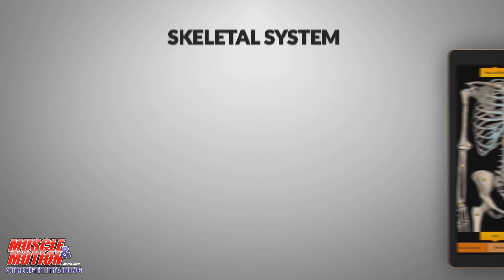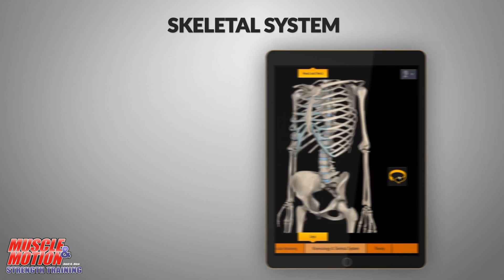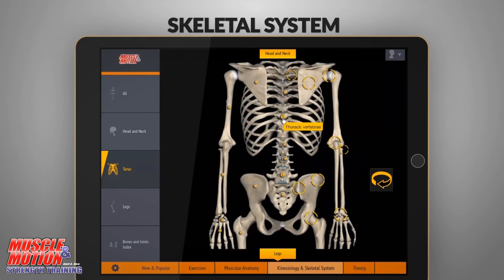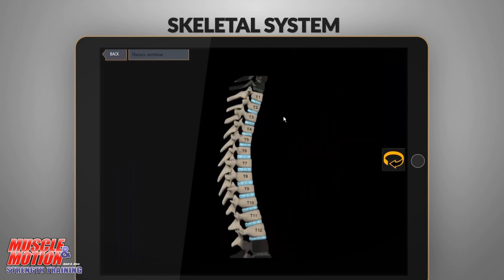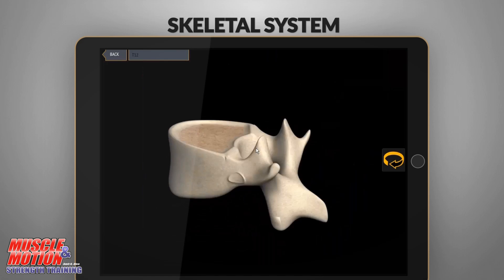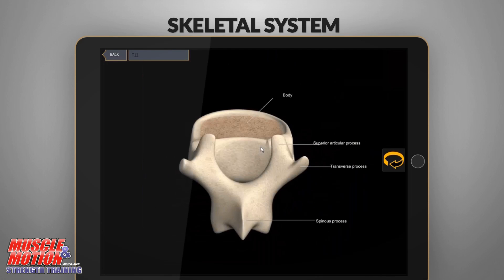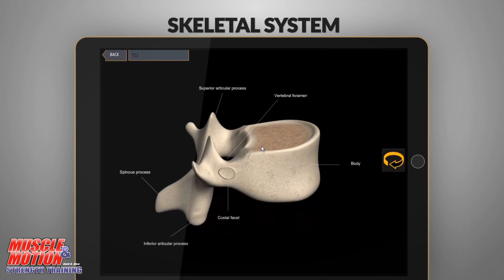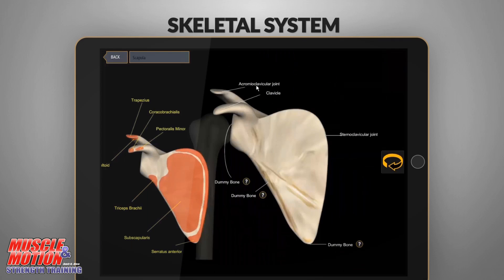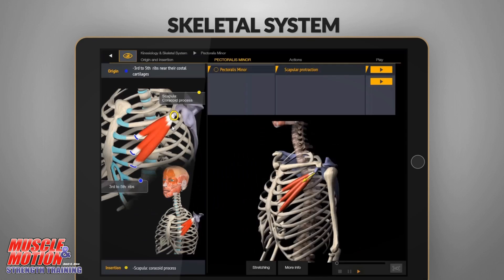Skeletal system. View the skeletal system in 3D. Rotate each bone so that you can see it from all directions. The skeletal system is extremely accurate and creates an interactive connection with the muscular system. See how the muscle that is attached to the bone moves it.